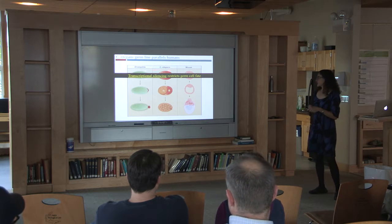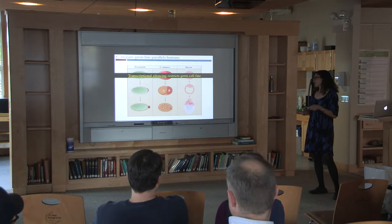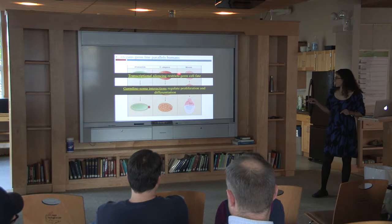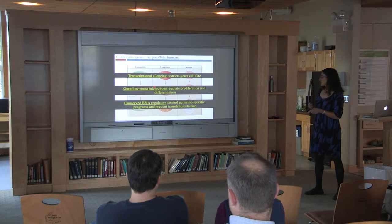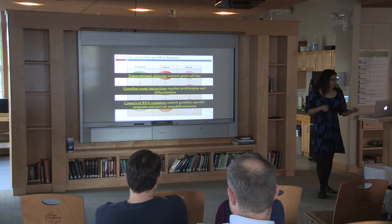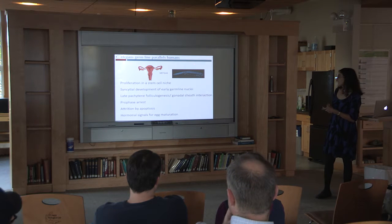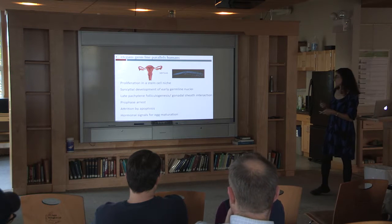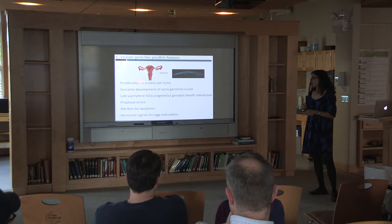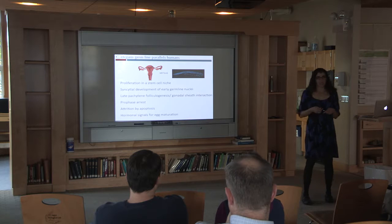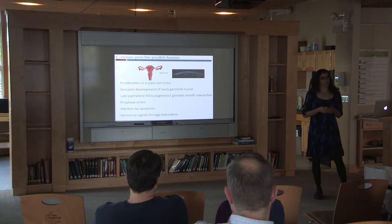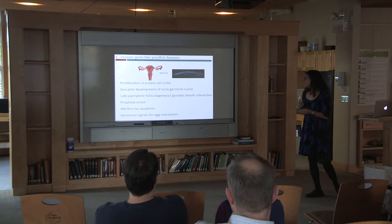I'll just highlight a few of these. Specifically, to have the germ cells develop properly, we need transcriptional silencing, which restricts germline fate and keeps the germline quiet. There are germline soma interactions that regulate proliferation, and a bunch of conserved RNA regulators that control germline-specific development. When we look at the adult germline, although this ovary and this extruded gonad from the worm look really different, there are many features that are similar: proliferation and a stem cell niche, syncytial development, folliculogenesis versus enrapment in a gonadal sheath, prophase arrest during meiosis, an attrition process in both organisms, and hormonal signals regulating it. This hopefully underscores the similarities between these organisms and gives insights into why we think we can learn a lot about germ cell development from the nematode.